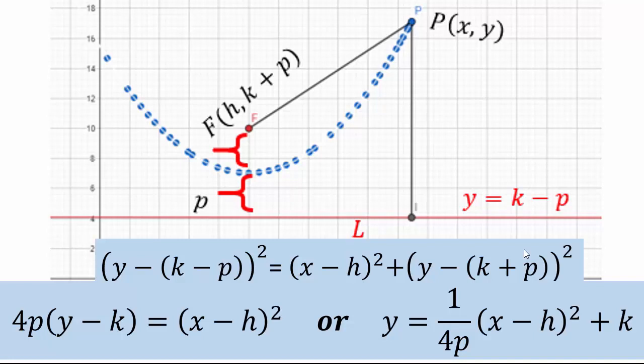If you swap x and y so the parabola opens sideways, all the y's become x's and x's become y's, with h and k reversing roles. If p is positive, the parabola faces up; if p is negative, it faces down. For x = (1/4p)(y−k)² + h, p positive gives a parabola facing right, and p negative gives a parabola facing left.